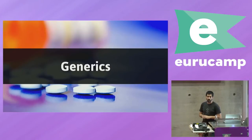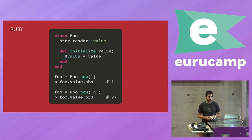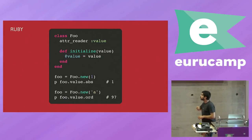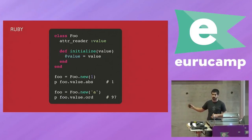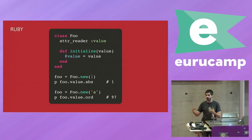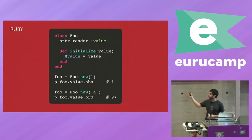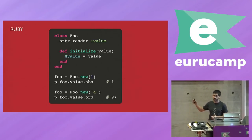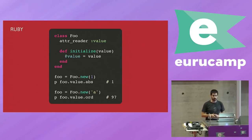Another important part of Crystal are something called generics that we don't really have in Ruby, but there are in other languages. And the idea is that let's take this Ruby code. This is a Foo class, very simple class. You have a natural reader with a value, and you have an initializer that takes a value. So very, very simple class. And then we use it. We create an instance of the class with an integer, and we get the absolute value for that integer. We get one. Fine. Then we create another instance with a char, and we get the ASCII code for that char. Fine. It works well. No problem there. Everything in Ruby just works.